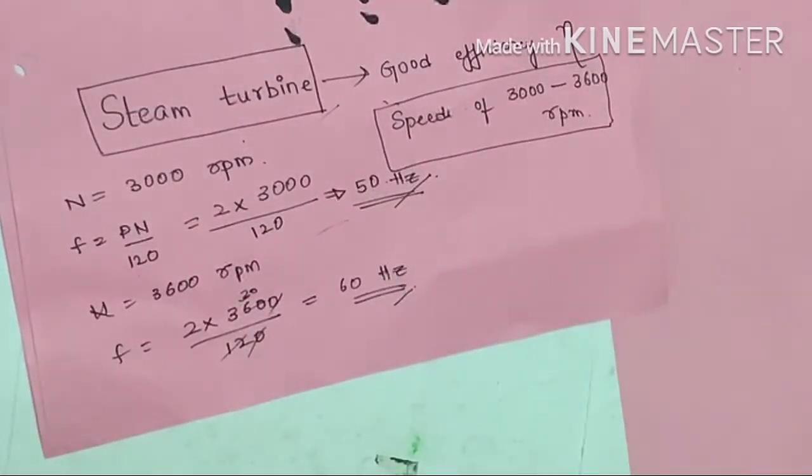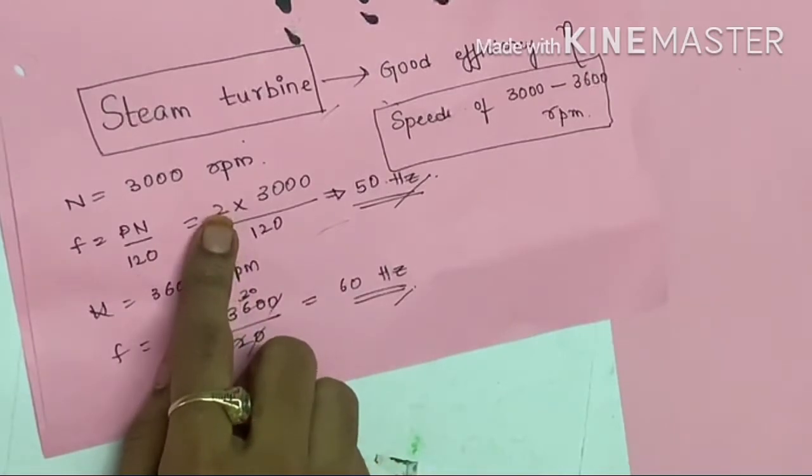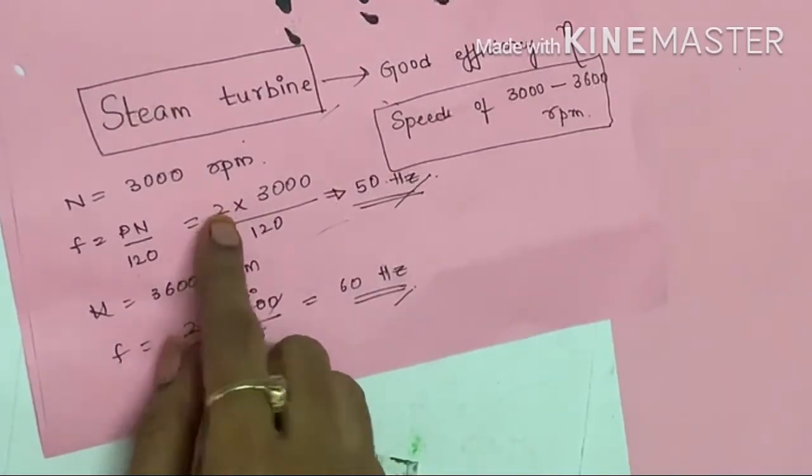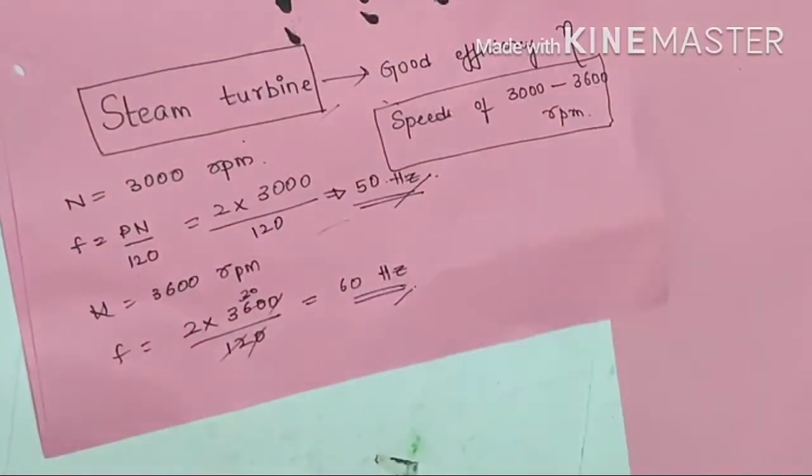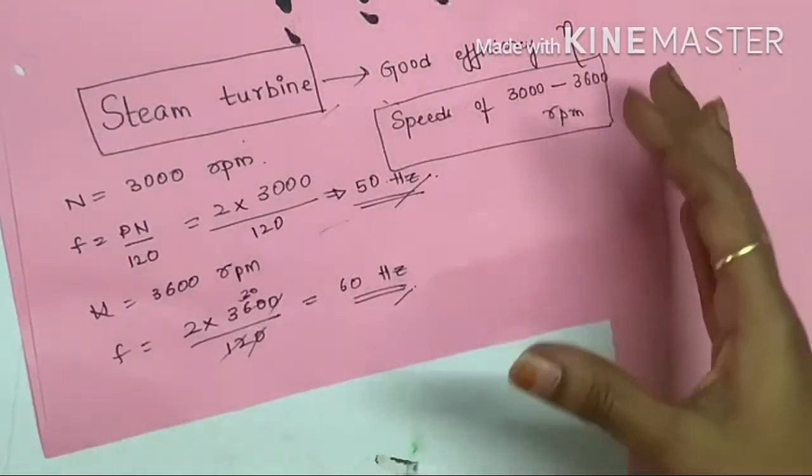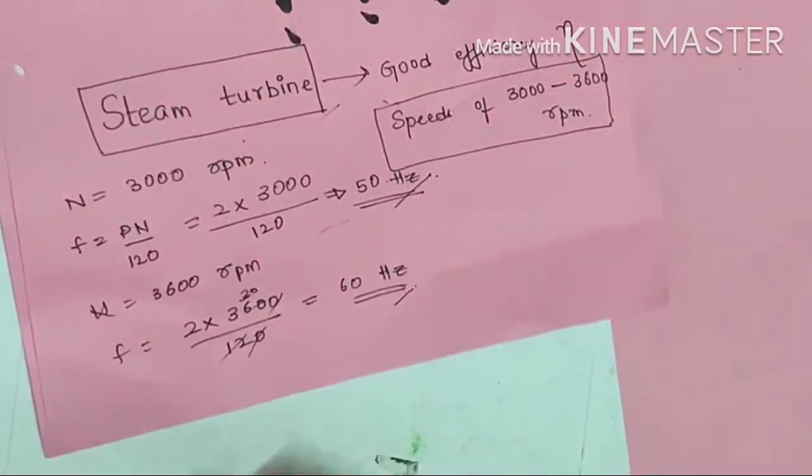If you go for a higher number of poles, if I go for a 4-pole generator, then it will be 100 Hertz. So the minimum frequency to get good efficiency of the steam turbines is 50 Hertz or 60 Hertz.